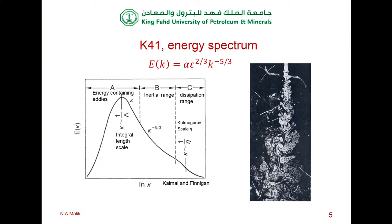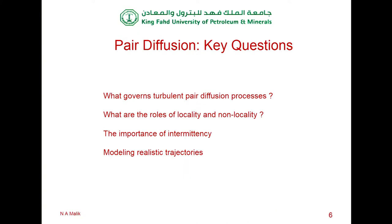You have the famous five-thirds spectrum. Of course, this is after 1926 — Richardson had no knowledge of this as such. The key questions we want to address are: what governs the pair diffusion process? In particular, what roles, if any, do local and non-local processes play? And the importance of intermittency, and also: how do you actually model these things? Theory is one thing, but we'd also like to be able to simulate them.